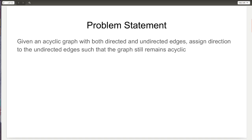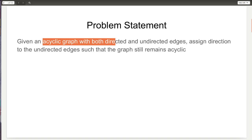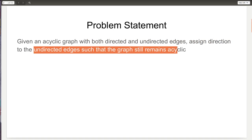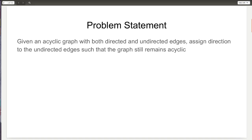The problem statement says that we are given an acyclic graph with both directed and undirected edges, and what we have to do is assign direction to the undirected edges such that the graph still remains acyclic. That means we have been given a graph which has both directed and undirected edges, but if we consider the graph with just the directed edges, it's an acyclic graph. So what we have to do is assign direction to the remaining undirected edges such that the graph remains acyclic.